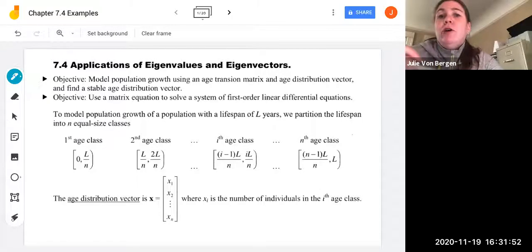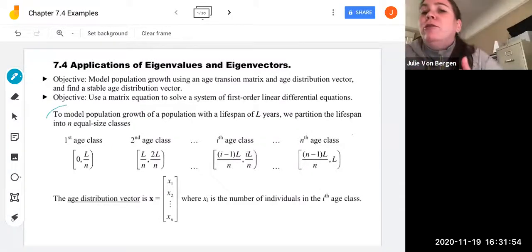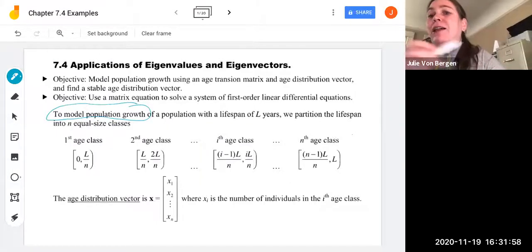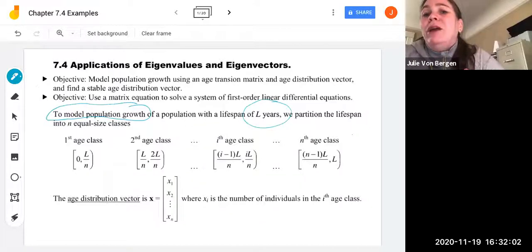So in this first video we're going to talk about our population growth models. So to model population growth of a population with lifespan that we call l years, we partition the lifespan into what we call n equal size classes.